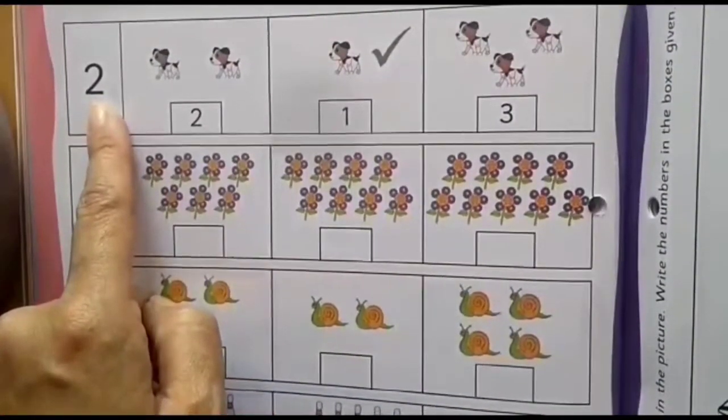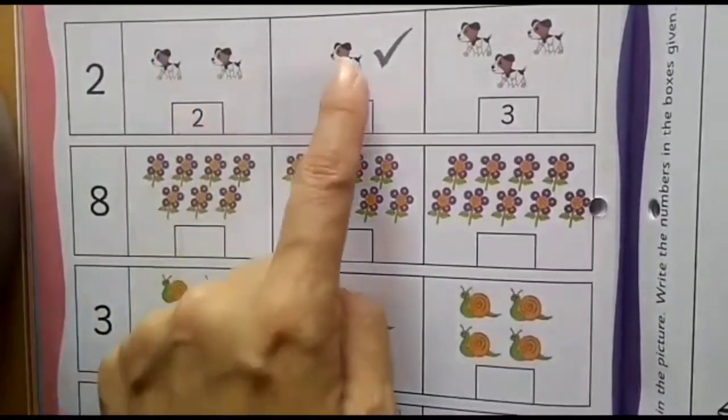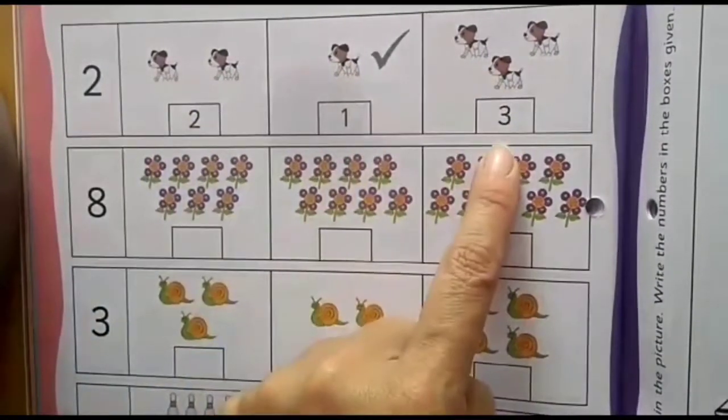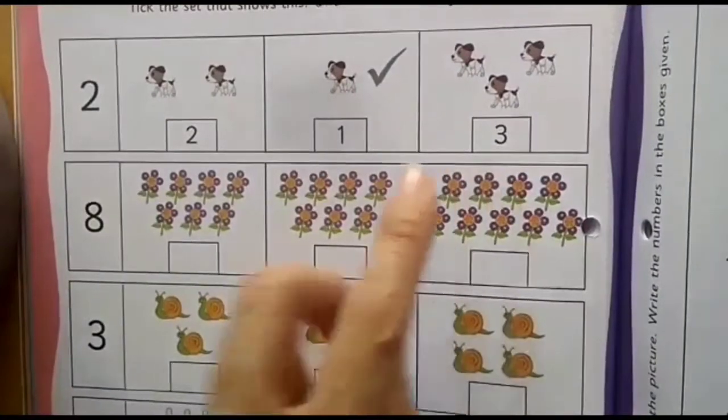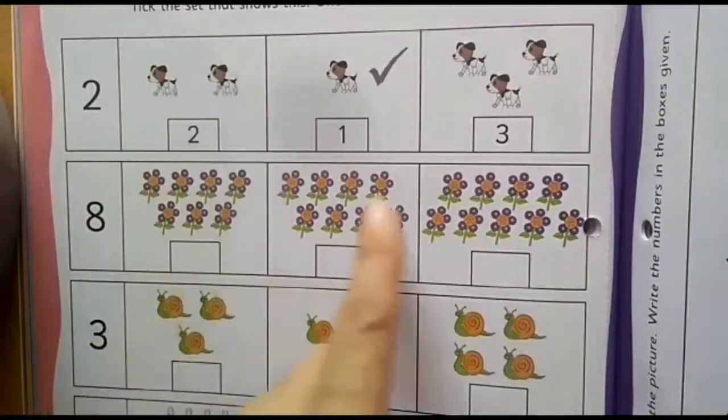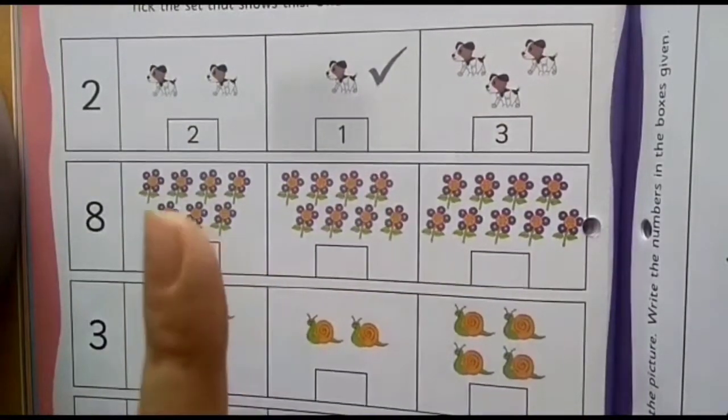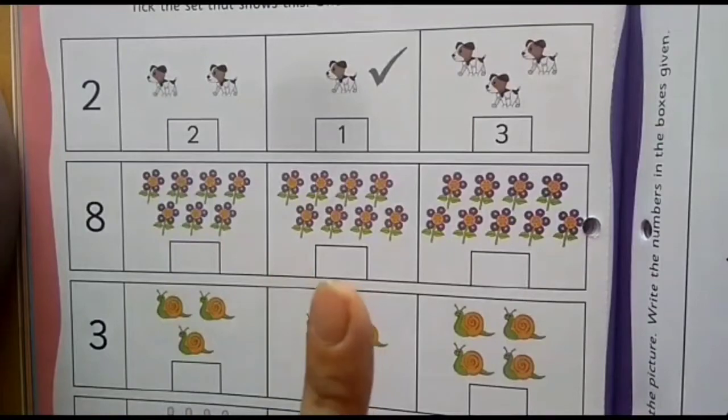See, this is 2. You can see the number of objects and the numbers written here. One less than 2. This is 2, one less. So, which number? Number 1. See, you can see here. Likewise, here also we will do. But first what we need to do, we need to count all the objects and write the numbers. I will show you.